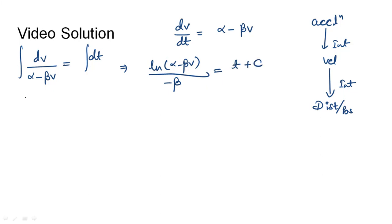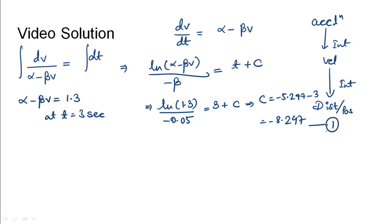Now we have been given that the value of alpha minus beta v is 1.3 at time t equals 3 seconds. So we will substitute this. We would get ln of 1.3 divided by minus 0.05 equals 3 plus c. From this we will get the value of c as minus 5.247 minus 3 which would become minus 8.247. Let us call this equation 1.